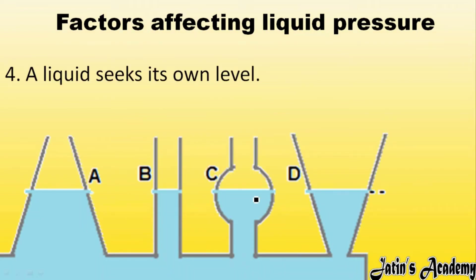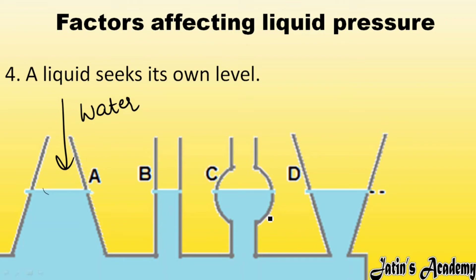A liquid seeks its own level. When liquid is poured into different vessels — A, B, C, D — of different shapes and sizes, the water will settle at the same level in all beakers, irrespective of shape and size. This happens because the pressure at the base is the same due to the same density, so the liquid seeks the same level.